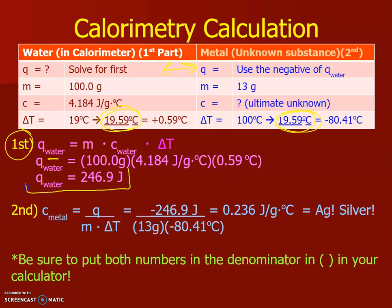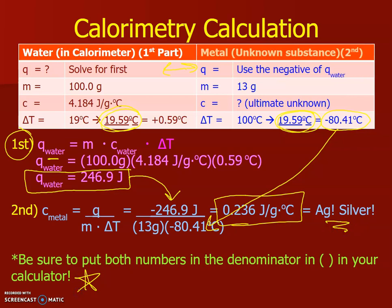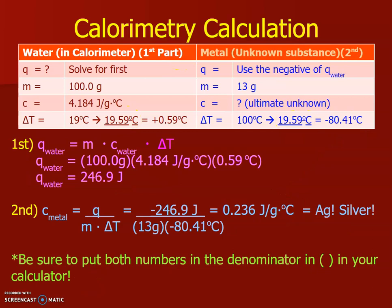And we get 246.9 joules. That becomes a negative value on the other side. And then you have your 13 grams of metal ring, and the metal was initially at 100, so it goes down to 19.59. So it's negative 80.41. That goes here and we get our specific heat of silver. And as I mentioned, please be sure to put both of your numbers in your denominator for your calculator. And that is our heat.